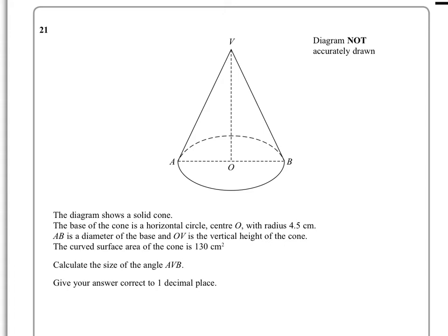In question 28 we have a solid cone. We're told that the base has got a radius of 4.5, so this is 4.5. We're told that the curved surface area of the cone is 130 cm², and that will come in handy later.